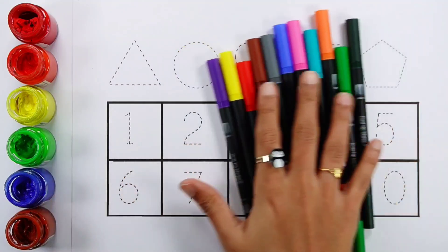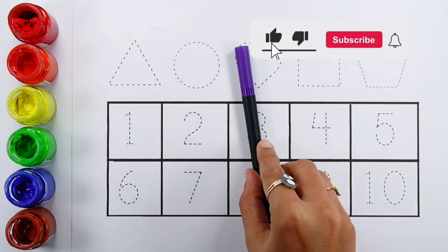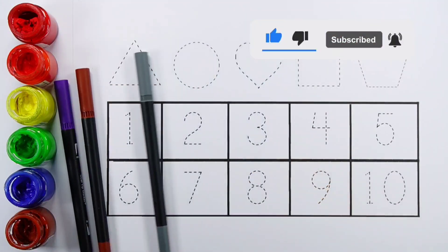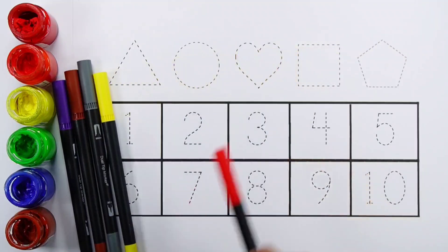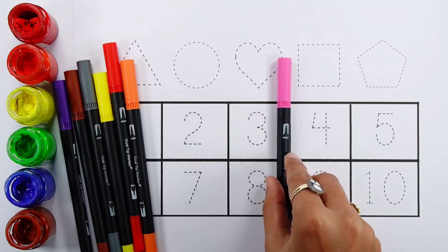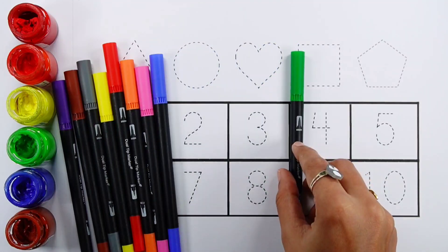Let's learn some colors. Violet color. Brown color. Gray color. Yellow color. Red color, orange color, pink color, blue color. Green color.